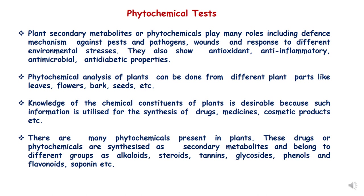There are many phytochemicals present in plants of medicinal importance. These secondary metabolites belong to different groups like alkaloids, steroids, tannins, glycosides, phenols, flavonoids, saponins, etc. In the previous lecture we discussed alkaloids and their tests. In this lecture we will be discussing tannins and saponins along with their tests.